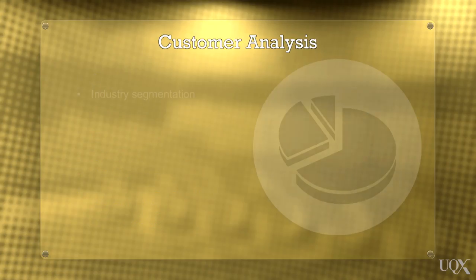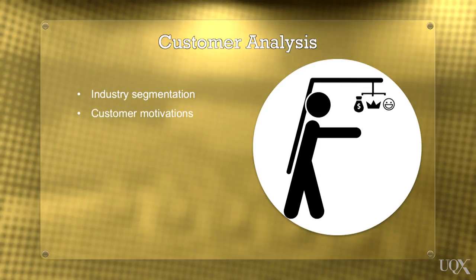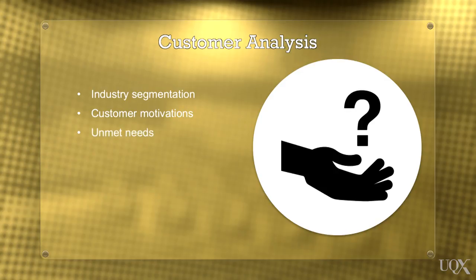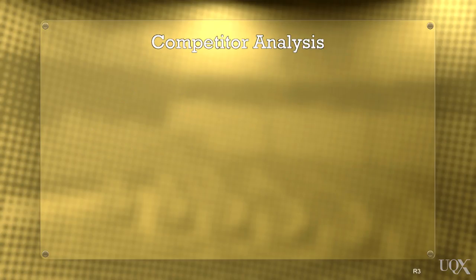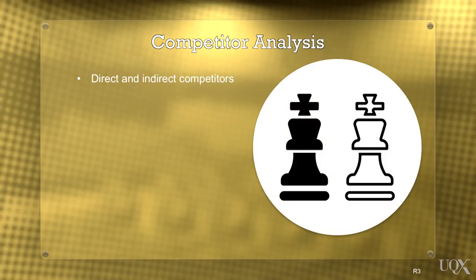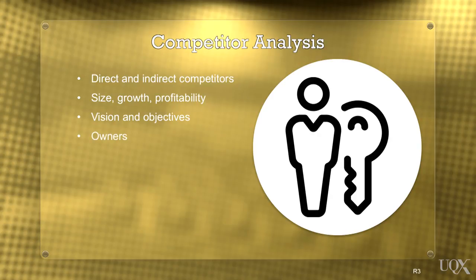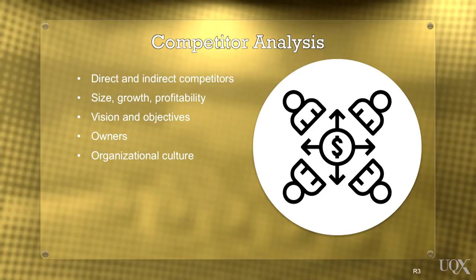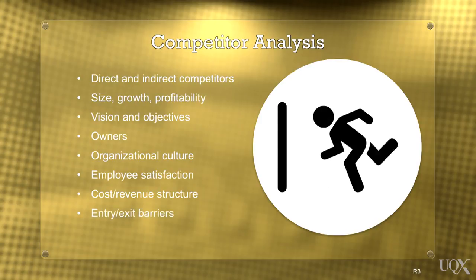A customer analysis examines whether the industry is segmented and if so, how and why. What are customer motivations? What are the unmet needs of customers and what is underlying customer buying decision processes? And finally, a competitor analysis examines who are our competitors, both direct and indirect. What is their size, growth and profitability? What is their vision and objectives? Who are they owned by and led by? What is their organisational culture? How satisfied are their employees? What is their cost revenue structure? And what are the barriers to entry and exit? Those who have studied strategy before may recognise elements of Porter's Five Forces, which remain the foundation for most industry analyses.